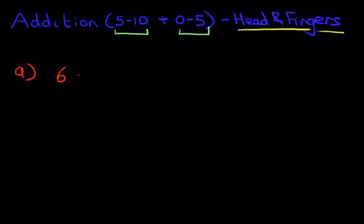Suppose we have this question: 6 plus 5. The head and fingers method is very useful when you don't have any paper and you cannot do any workings. You have to do this with mental arithmetic. We're going to use head and fingers. So let's look at this question: 6 plus 5.